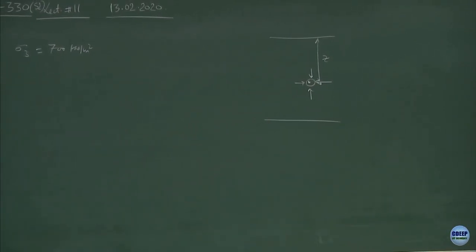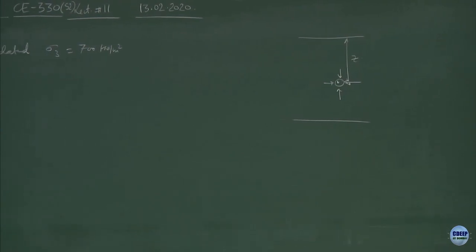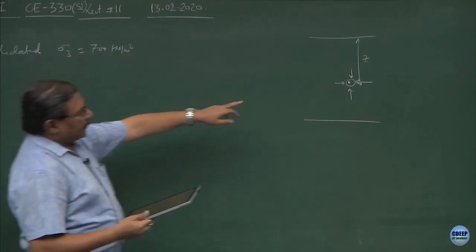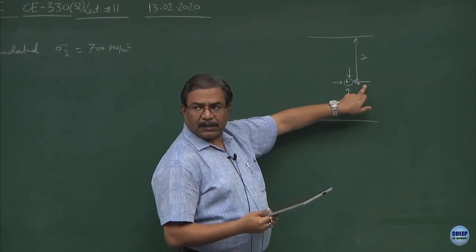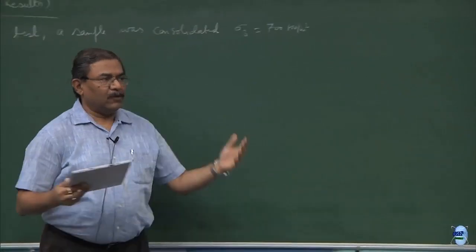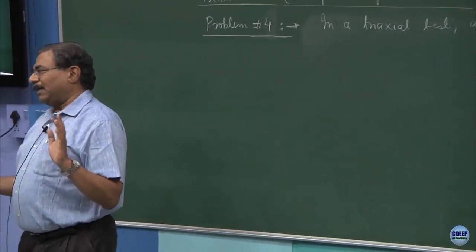If I know the gamma d value of the soil sediments and the depth at which I am working, gamma d multiplied by z will give me the sigma 3 value. This sigma 3 I am using for confining the whole sample. The best possible simulation of field conditions can be done like this.